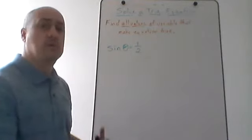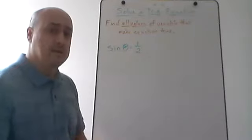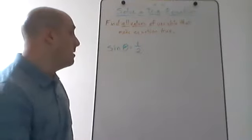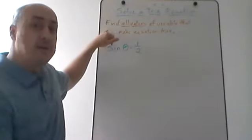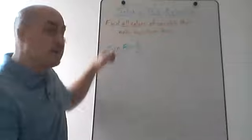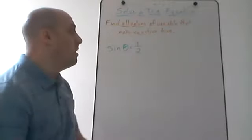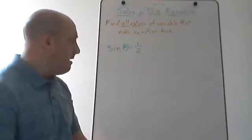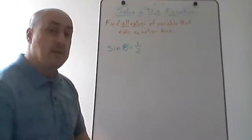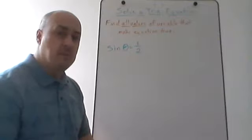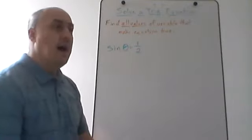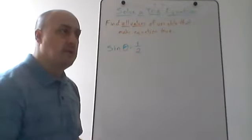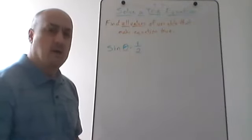We'll do this example and at least one more on this video, then I'll do some other videos with more complicated examples of solving trigonometric equations. When we solve a trigonometric equation, the key thing is we want to find all the values of the variable that make the equation true — just like with any other type of equation.